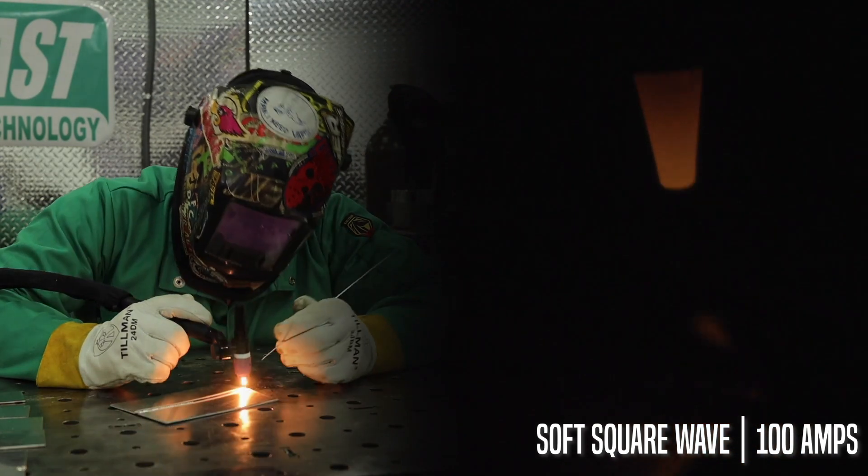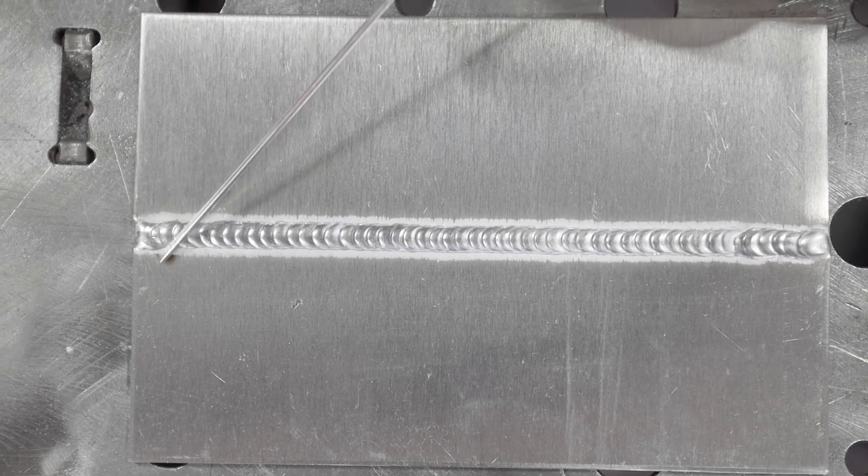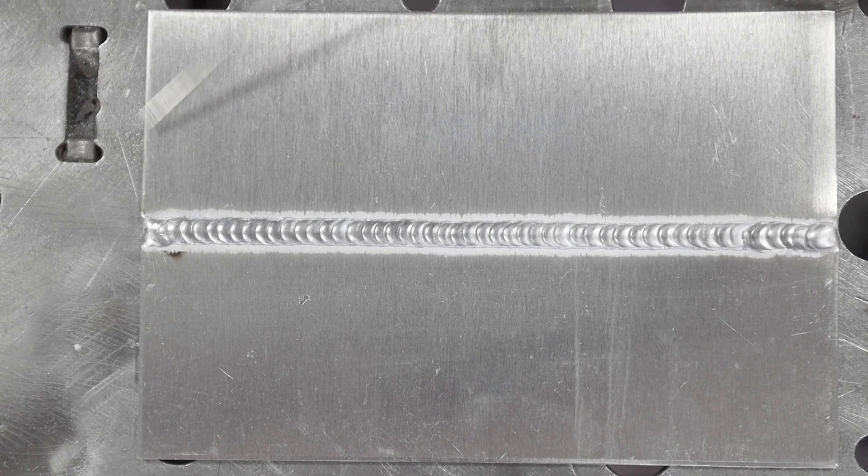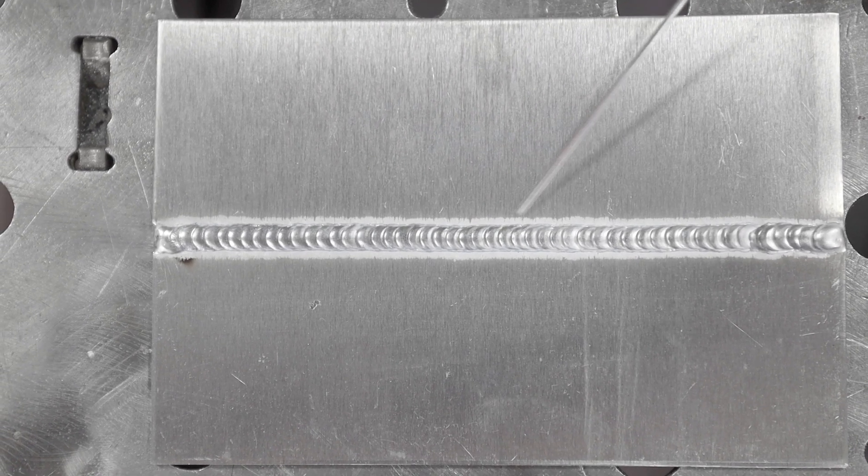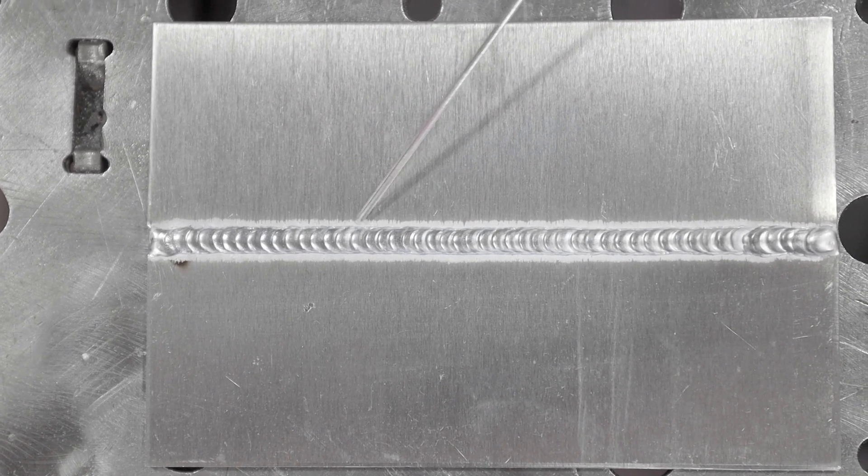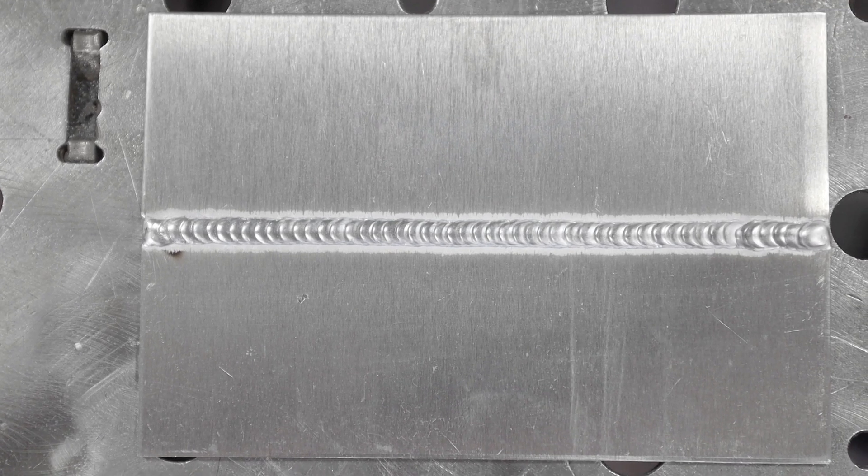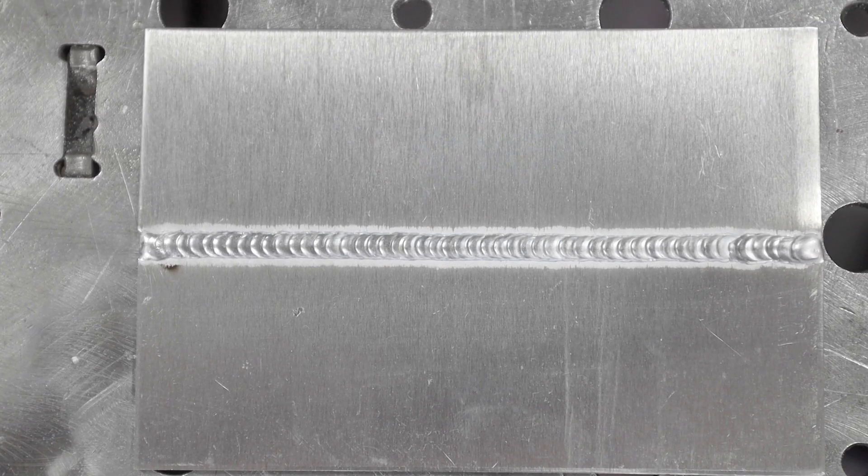So here we have our advanced square wave run. You can see we had a very nice stable arc. There's no crazy etching marks along the weld. The etching is very smooth, very consistent. The toes of the weld are very consistent. This is just a very nice, stable, high heat input waveform.